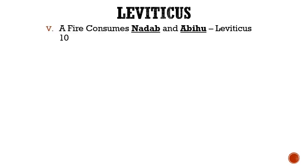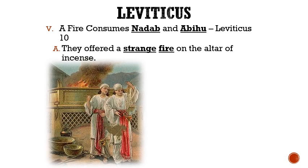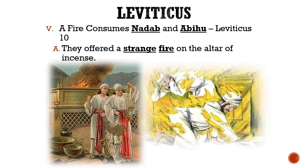Roman numeral 5: A fire consumes Nadab and Abihu. Letter A: They offer a strange fire on the altar of incense. Nadab and Abihu offered something on the altar of incense that was not allowed, so the Lord sent a fire to devour them. It could be that they were burning the incense with fire of their own making, rather than taking fire from off the altar.